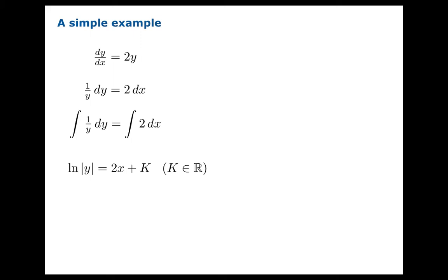So ln of absolute value of y, in this case, is equal to 2x plus a constant of integration, which could be any real number. Absolute value of y is therefore e to the 2x plus K. And we can apply the law of exponents to rewrite that as e to the 2x times e to the K on the right side.